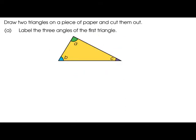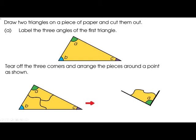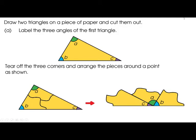What do we have to do? You have to draw two triangles on a piece of paper and cut them out. Label the three angles of the first triangle A, B, and C. Tear off the three corners and arrange the pieces around a point as shown. Arrange the angles: A, then B, then C.